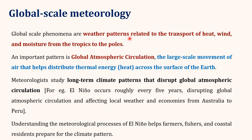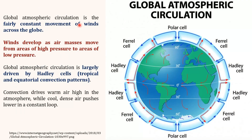Global scale phenomena are weather patterns related to the transport of heat, wind and moisture from the tropics to the poles. An important pattern is the global atmospheric circulation — the large-scale movement of air that helps to distribute thermal energy across the surface of the earth. This global atmospheric circulation is the constant movement of winds across the globe. Winds develop as air masses move from regions of high pressure to regions of low pressure. Air movement can be seen from 30 degrees north toward the equatorial belt and toward 60 degrees north, and similarly from 30 degrees south. This global atmospheric circulation is largely driven by the Hadley cells, that is the tropical and equatorial convection patterns.